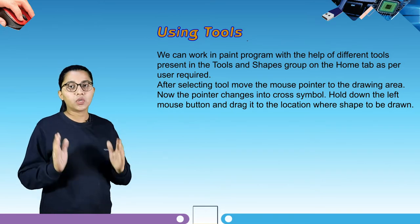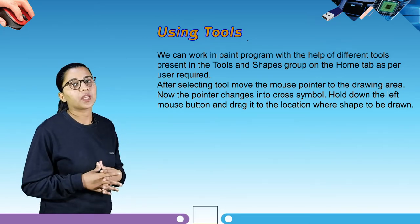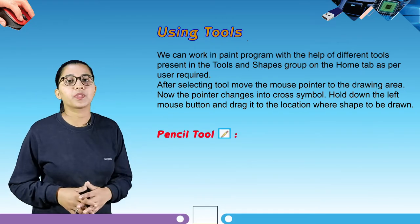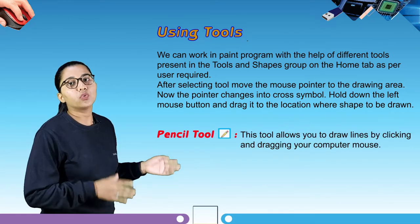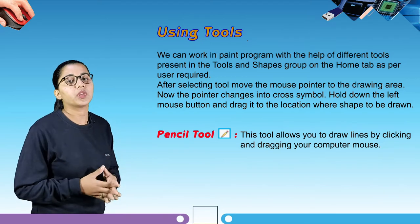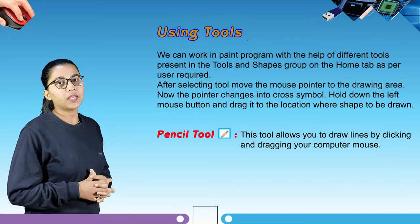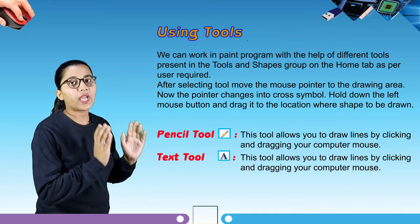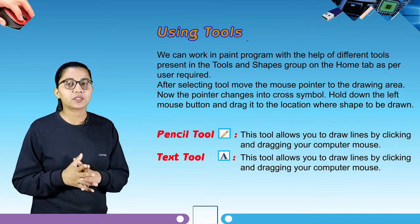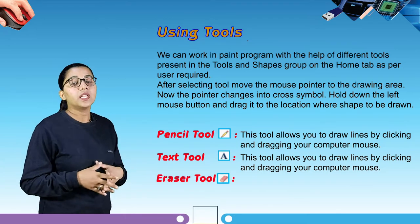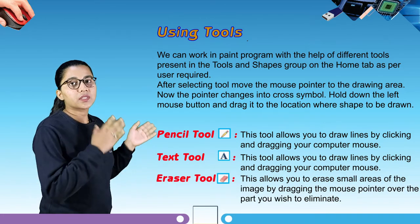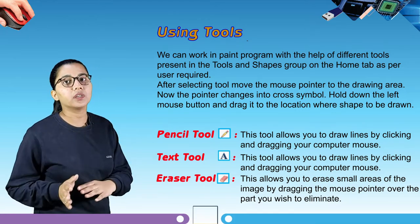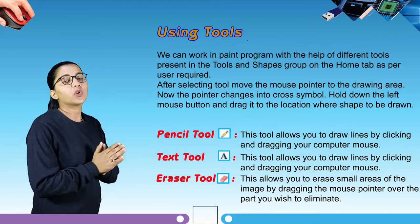Let's learn about the different tools of MS Paint. The first tool is the pencil tool, which allows you to draw lines by clicking and dragging your computer mouse. Next is the text tool, which is used to add text to images. Next is the eraser tool, which allows you to erase small areas of the image by dragging the mouse pointer over the part you want to eliminate.